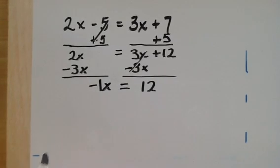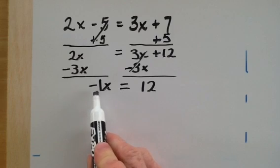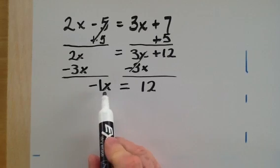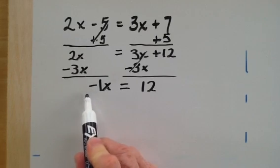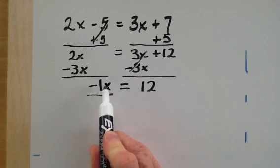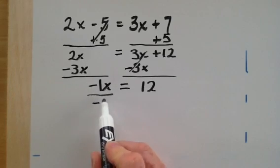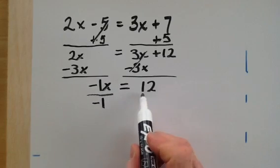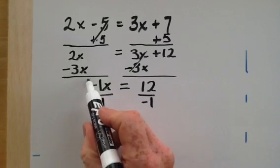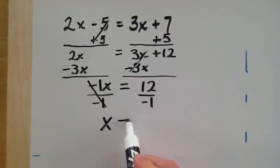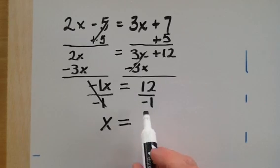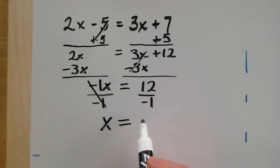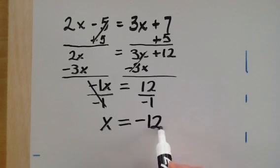Now, we still haven't solved this completely because we have this constant that's attached to our variable x. And we want just x. So when something is multiplied by a variable, if we divide by it, so this time we're going to divide by a minus 1 both sides, that will cause us to get a positive 1x, or just x, and we often write it that way, and 12 divided by a minus 1, a positive divided by a negative is a negative. So it's a negative 12.